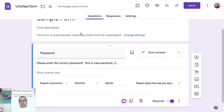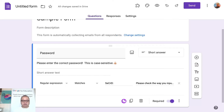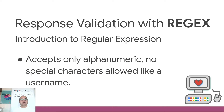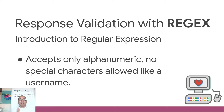So that's how you create a password — you don't need square brackets for this. Now let's continue using square brackets with our next example: a username field that accepts only alphanumeric characters, with no special characters allowed. Users can use numbers or letters but nothing else, just like a typical username. Let's see how to do this using response validation with regular expressions.